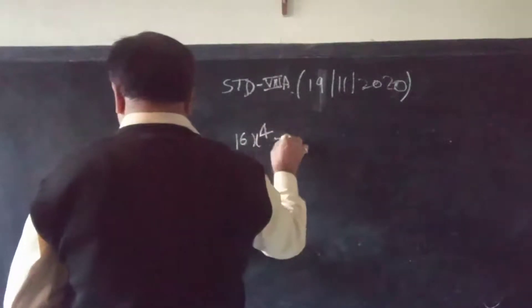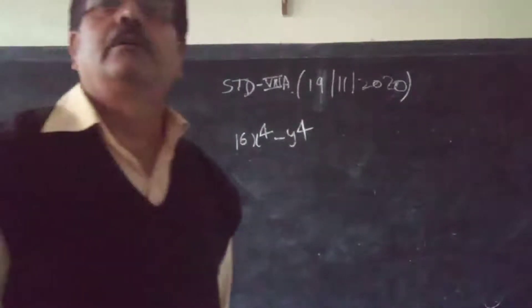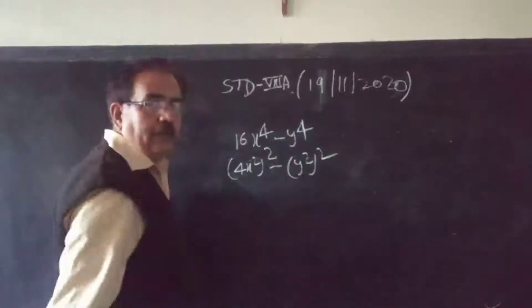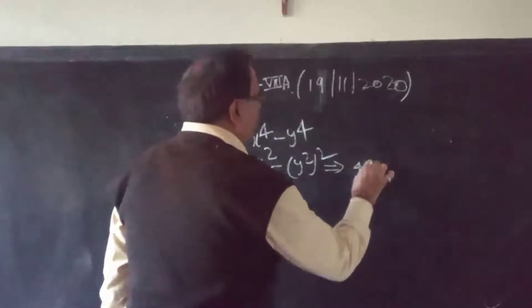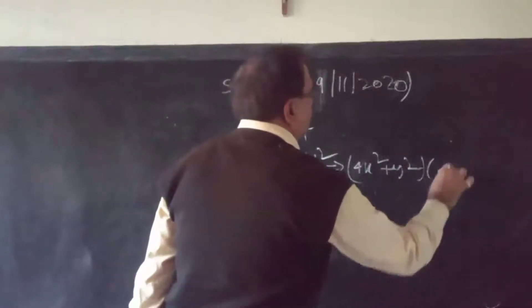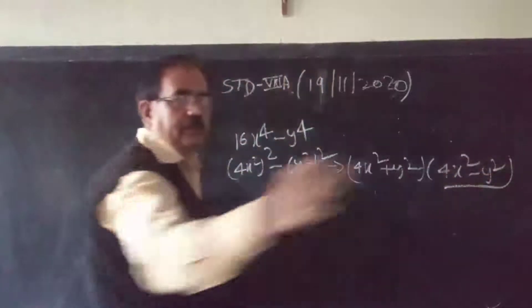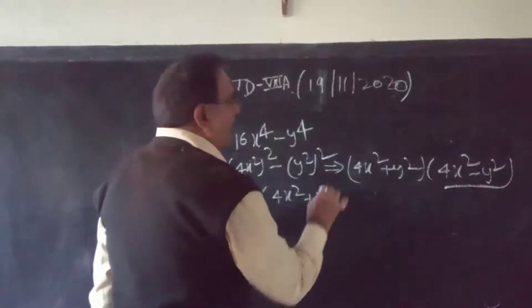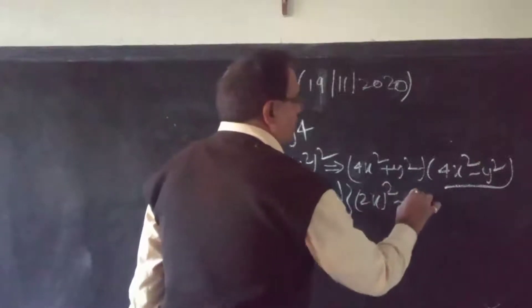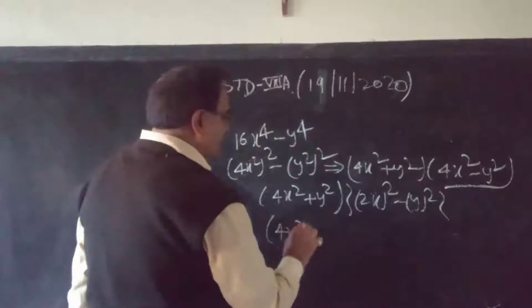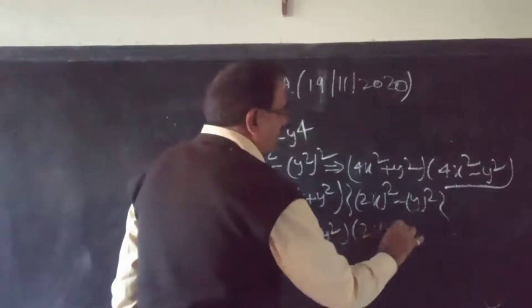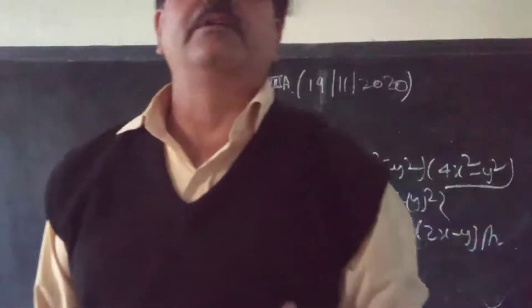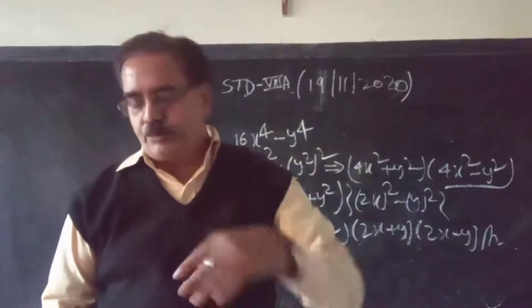Next: 16x to the 4th minus y to the 4th. See, this is 4x squared whole squared, this is y squared whole squared. Now A squared minus B squared, what is the result? 4x squared plus y squared times 4x squared minus y squared. Second line, again A squared minus B squared, so we break it. So 4x squared plus y squared times 2x whole squared minus y whole squared. This gives us 4x squared plus y squared times 2x plus y times 2x minus y. So if any bracket is given in the A squared minus B squared form, you have to break it.